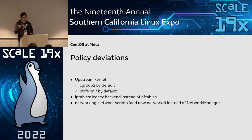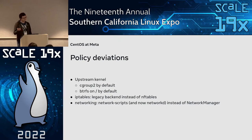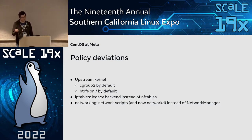This is what we call a policy deviation — a conscious choice to put something in production that differs from what the distribution does. Other examples: we don't use nftables in production, we still use the legacy iptables backend, so we rebuild the iptables packages with that backend enabled. On networking, upstream CentOS has used NetworkManager for a long time, but we've historically used network scripts since CentOS 5. Right now we're moving from network scripts to systemd-networkd, which we expect to deploy fleet-wide with CentOS 9.